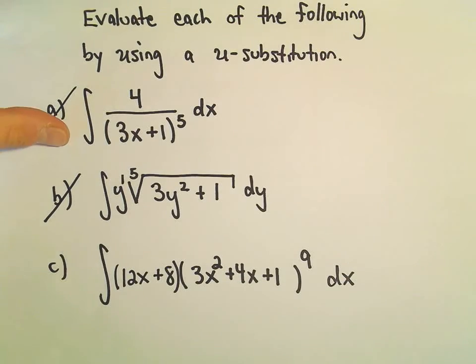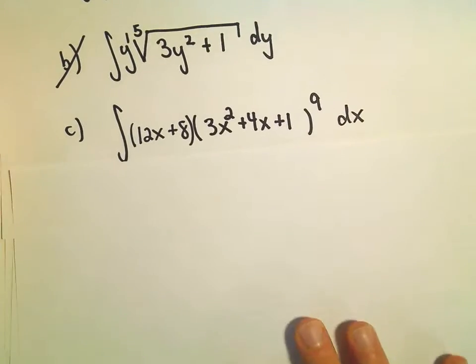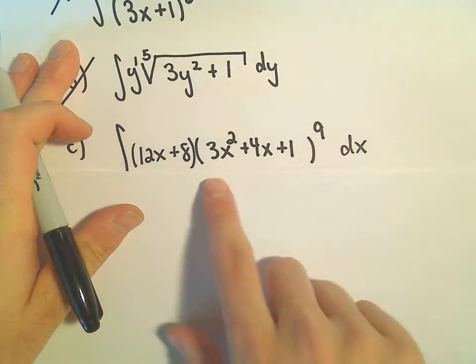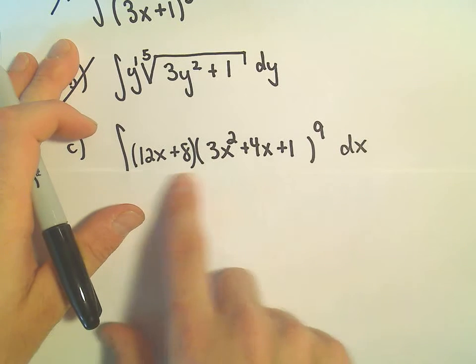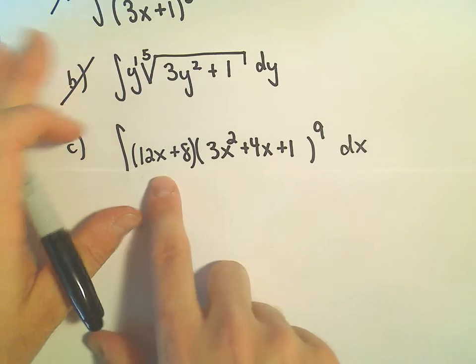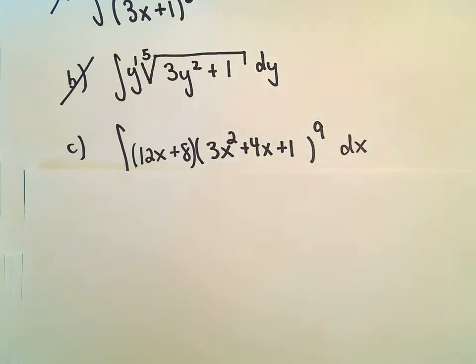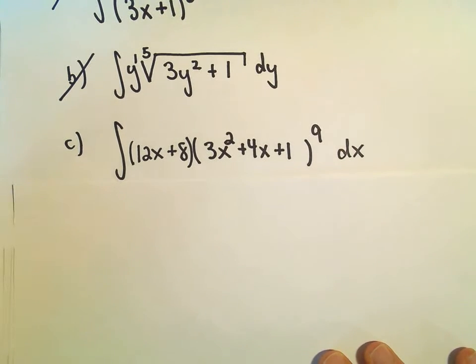The thing that makes me think u-substitution is I see something in parentheses that's to the second power, and then if I take the derivative of that, I'm going to get something to the first power, and hopefully it's set up so that everything will work out correctly.